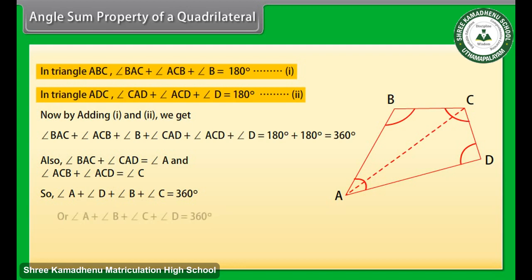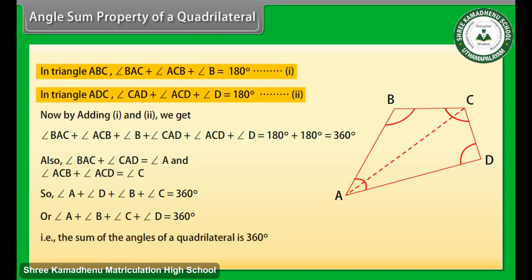Angle A plus angle B plus angle C plus angle D is equal to 360 degrees. That is, the sum of the angles of a quadrilateral is 360 degrees.